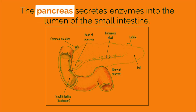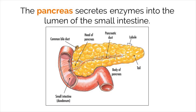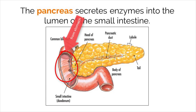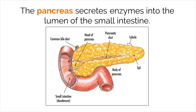Let's take a closer look at the pancreas, depicted in yellow on this image. The pancreas secretes enzymes into the small intestine via the pancreatic duct. Importantly, the pancreas releases these enzymes at the beginning of the small intestine right after the food exits the stomach. Along with the very large surface area of the small intestine, this ensures that there is enough time for food to mix with these enzymes so it can be properly digested.